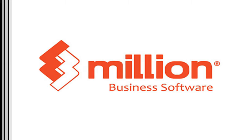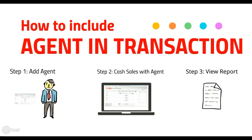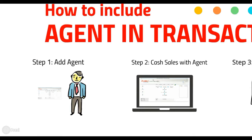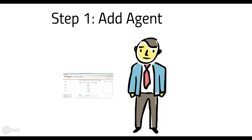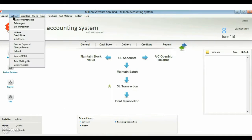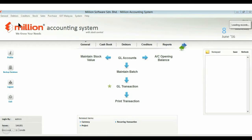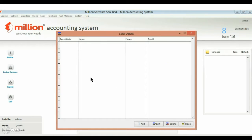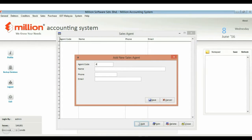Welcome to Millian Tutorial Session. We learned about how to include an agent in a transaction. Go to the adapter menu, then Sales Agent. Add your agent code and agent details.